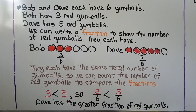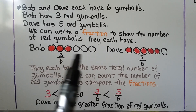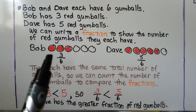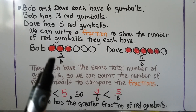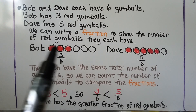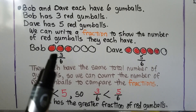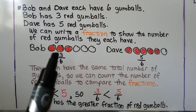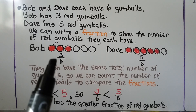Bob and Dave each have 6 gumballs. Bob has 3 red gumballs and Dave has 5 red gumballs. We can write a fraction to show the number of red gumballs each has. Bob has 6 gumballs — we draw 6 circles. We know 3 of them are red, so we color in 3 as red. He has 3 out of 6 gumballs that are red — he has 3 sixths that are red.